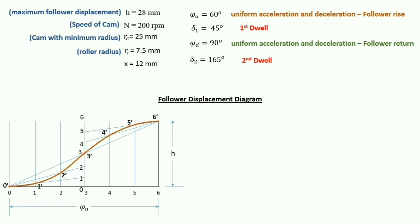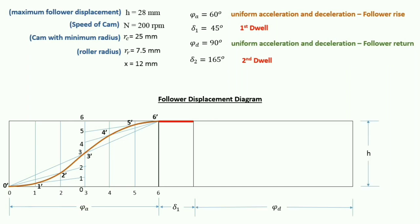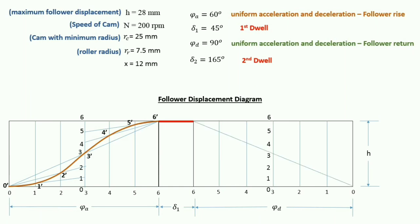This is the displacement curve for follower rise. Next is the dwell — the dwell angle is 45 degrees, so we take a suitable scale and draw it. Next is uniform acceleration and deceleration for follower return. We make a rectangle box for phi D with H on the vertical side, divide phi D into 6 equal parts, draw vertical lines, and make a diagonal. The center line is already divided into 6 equal parts. We join all the points and mark the intersection points from 6' to 0'. This gives the final displacement curve for follower return, followed by the last dwell.